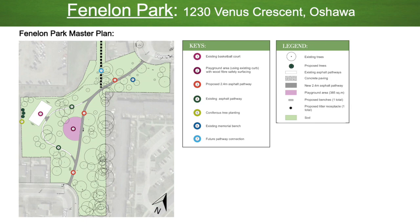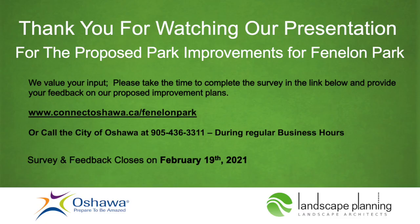All play elements will be designed for an age range of 2 to 12, and the surface material of the playground is proposed to be fully accessible wood fiber safety surfacing. Additionally, a central seating node with a bench and litter receptacle will be provided on concrete paving to serve the park and playground precinct.